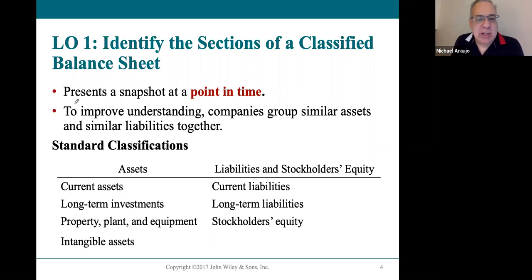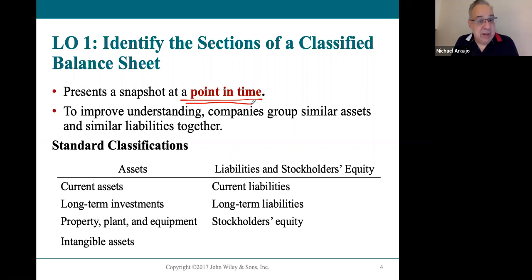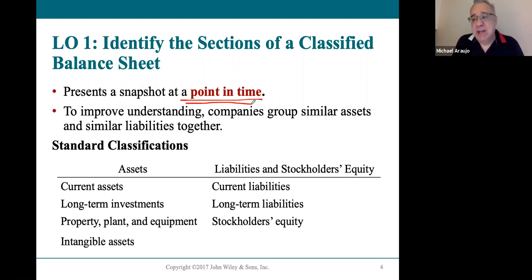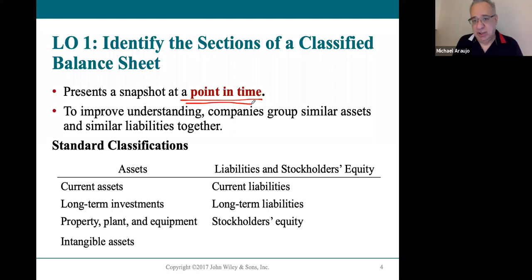Remember when you created your balance sheets from Chapter 1 — the only thing on a balance sheet is a date, a single date. That's different from an income statement that shows a period of time. The income statement covers a month, quarter, or year, but your balance sheet is simply a snapshot of the company's assets, liabilities, and stockholders' equity today. It's just a date.